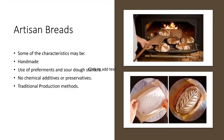So depending on our discussion we can conclude that there are some characteristics of artisan breads. One characteristic is that it is handmade. This is most closely related to the dictionary definition of artisan. Thus it necessarily means that artisan bread production is usually small scale and not high volume. Making artisan bread is not an automatic or purely mechanical process.